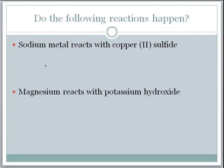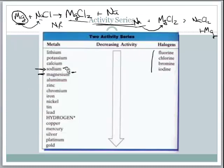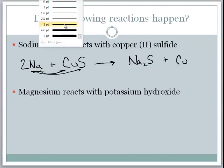Let's look at the first example: sodium metal reacting with copper(II) sulfide. You have to be able to write formulas. The products are sodium sulfide and copper. Balanced: 2Na + CuS → Na₂S + Cu. To determine if this reaction happens, we look at the thing doing the replacing — sodium — and check if it is higher than copper on the activity series. Sodium is clearly higher than copper, so this reaction would happen.